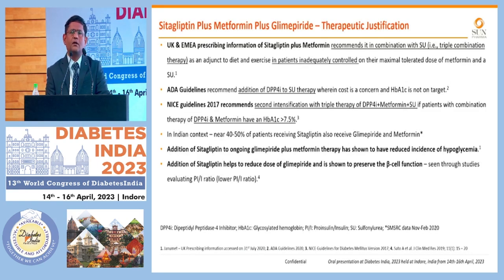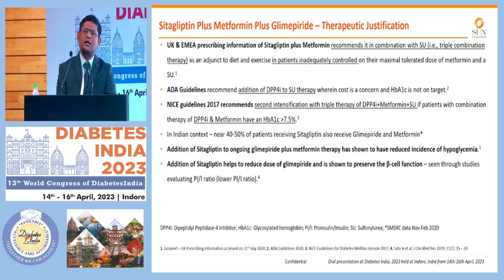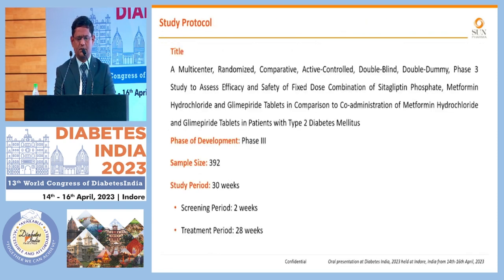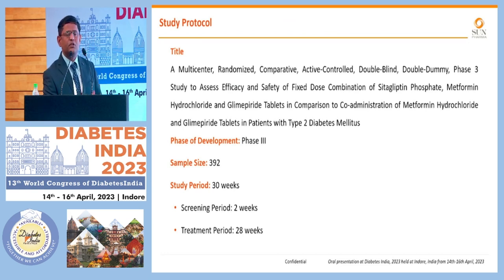When we talk about the therapeutic rationale, ADA guidance and several guidelines including RSSDI also state that combination therapy is required when you don't achieve target glycemic control — that is, when HbA1C is 1.5 times above target. I will move to the study design now due to time constraints.